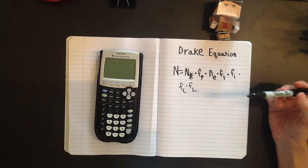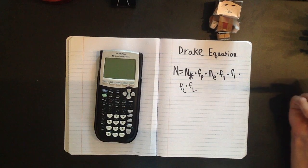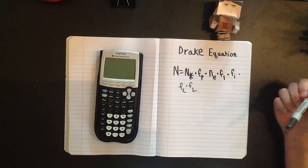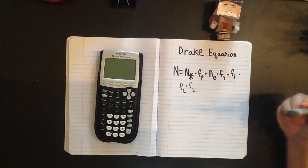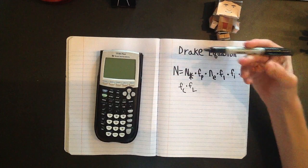Okay, so this is just a bunch of letters, nothing else but letters. And you can't do anything with this equation unless you know what the letters stand for. So as I said earlier, N is the number of civilizations.